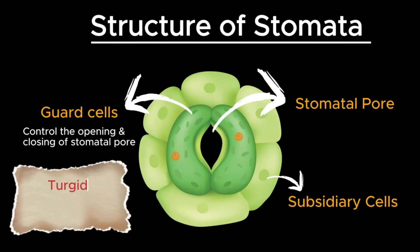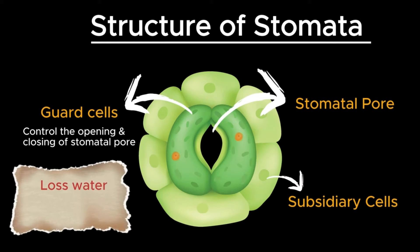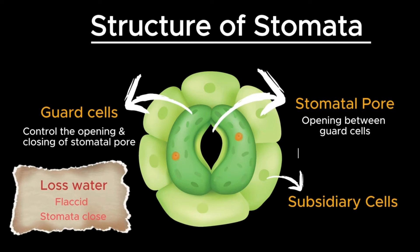The shape of guard cells is kidney or bean shaped. When they are turgid, they bow outward, causing the stomatal pore to open. When they lose water and become flaccid, they straighten, causing the stomatal pore to close. The stomatal pore is the opening between the two guard cells, and it serves as the gateway for gas exchange between the plant and its environment.